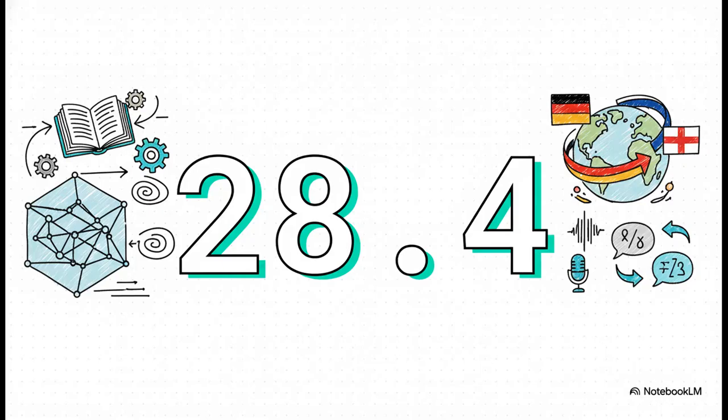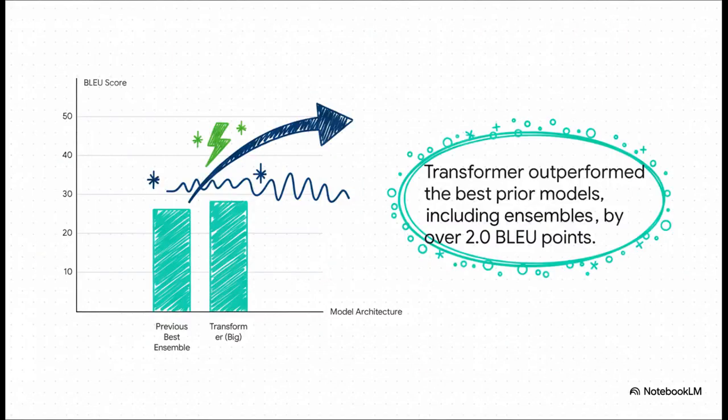So on a standard test for machine translation, a benchmark from 2014, the transformer hit a new state-of-the-art score for translation quality, what's called a blue score, of 28.4. Now that number, 28.4, might not sound super dramatic by itself, but the paper points out it smashed the existing best results by over two blue. In this world, an improvement of two whole points from a single new architecture was just unheard of. The transformer didn't just take one step forward, it took a giant leap over the entire field.